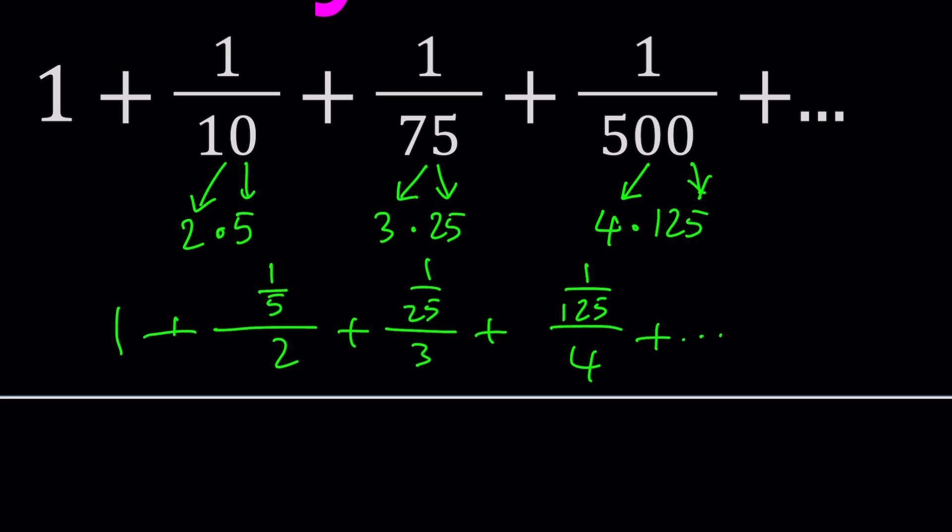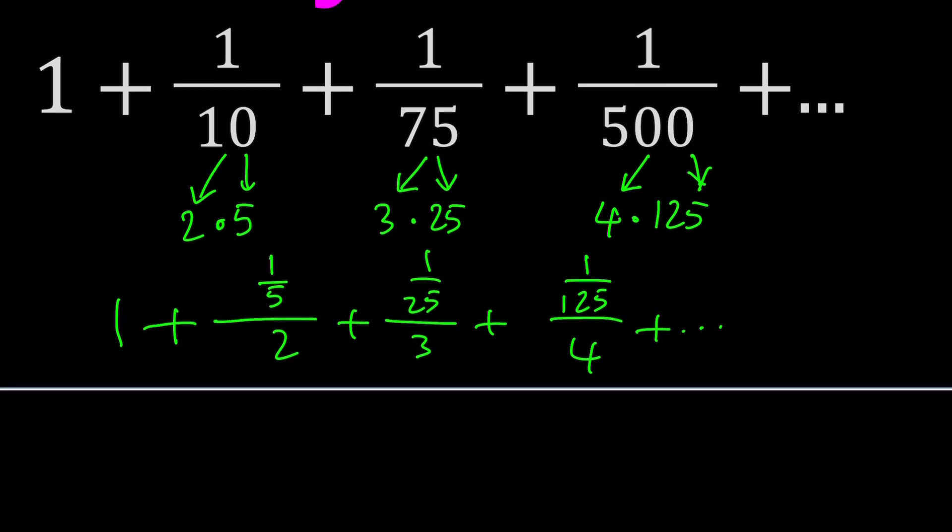The general term along with one—by the way, you can write this as one over five to the power zero divided by one, which is one. So all the terms fit the pattern. But what is the pattern? That is the million dollar question. I'm going to answer that in this video.